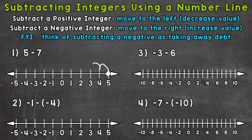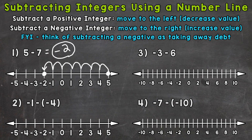One, two, three, four, five, six, and seven. So we end up at negative two, and that is our answer. Five minus seven gives us negative two.